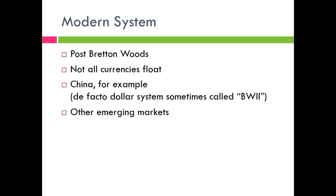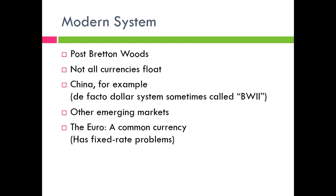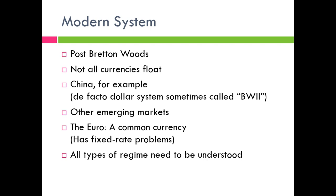Some emerging markets also maintain fixed exchange rates. The euro is a special case because within Europe every country has a fixed rate to one another — France and Germany have a perfectly fixed rate. This creates problems if, for example, Germany has high inflation and Greece has high unemployment: one money cannot solve both problems simultaneously. The euro represents a common currency leading to asymmetric policy challenges. There are also many exchange rate regimes in between perfectly fixed and perfectly floating that are important to understand in international finance.